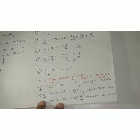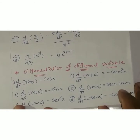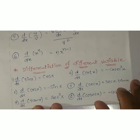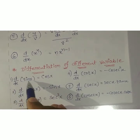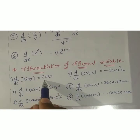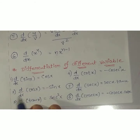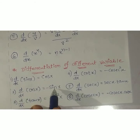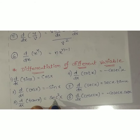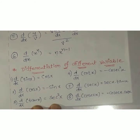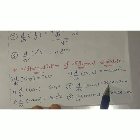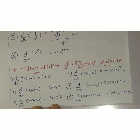Now differentiation of different trigonometric functions — these are important, so I'm showing them with a little more time. Differentiation of sin x gives cos x. Differentiation of cos x gives minus sin x. Differentiation of tan x gives sec² x. Differentiation of cot x gives minus cosec² x. Differentiation of sec x gives sec x · tan x. Differentiation of cosec x gives minus cosec x · cot x.